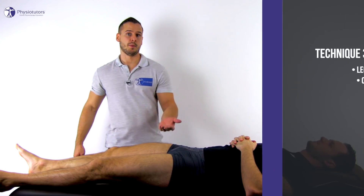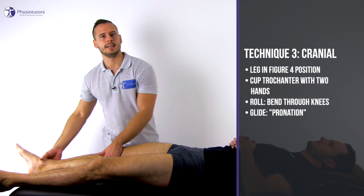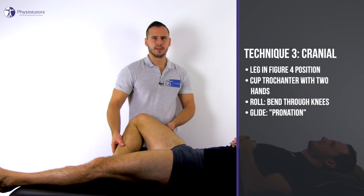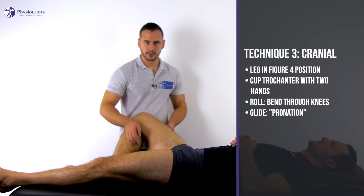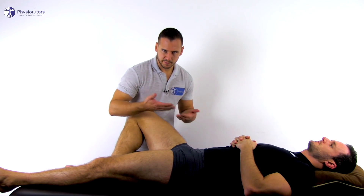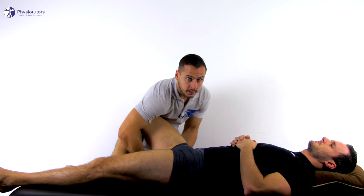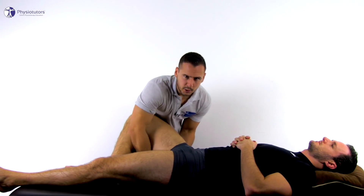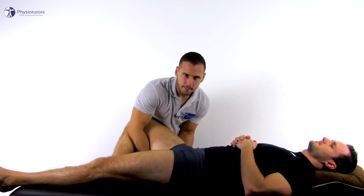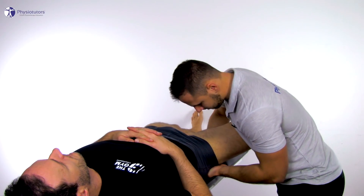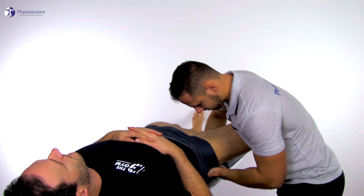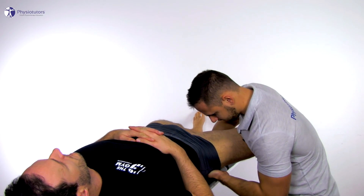Additionally, and if possible, place the leg in a figure-4 position, then approach the greater trochanter in a cupping fashion with both hands. From here you can induce the roll by bending through your knees and then apply the glide by pronating the forearms.